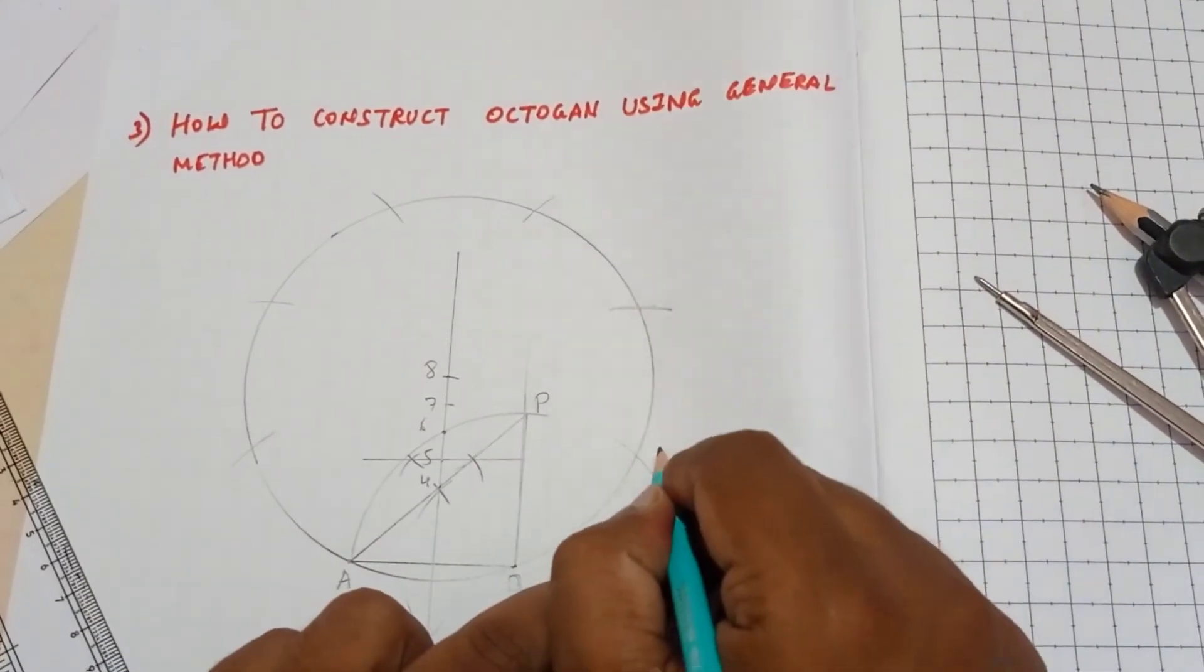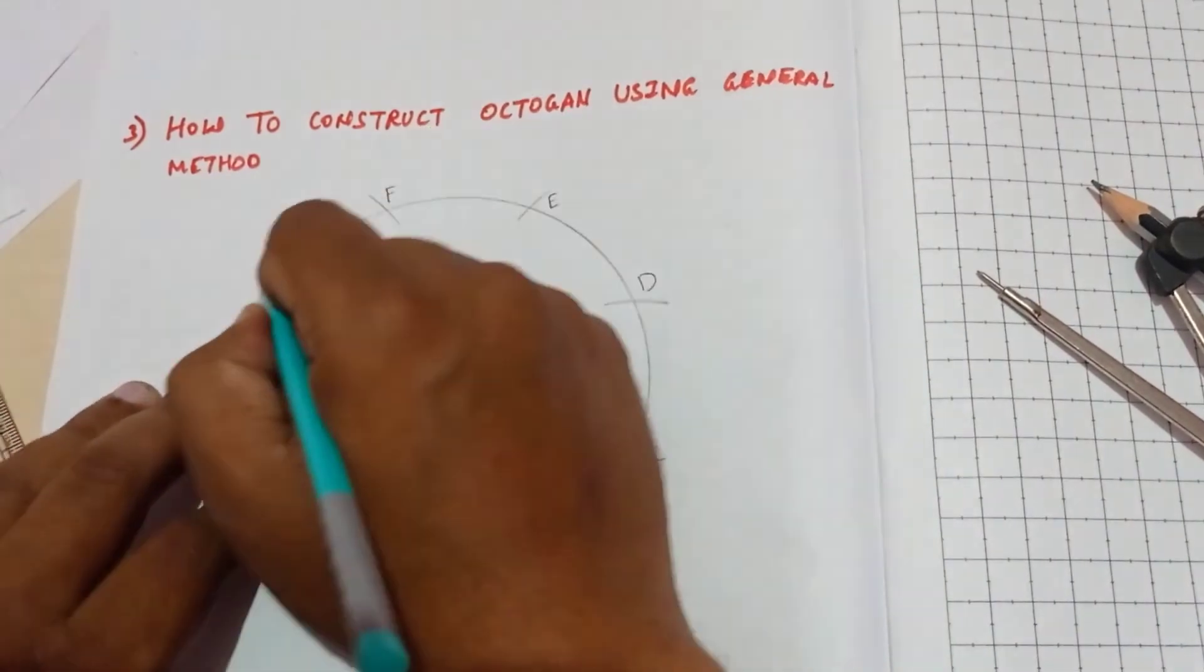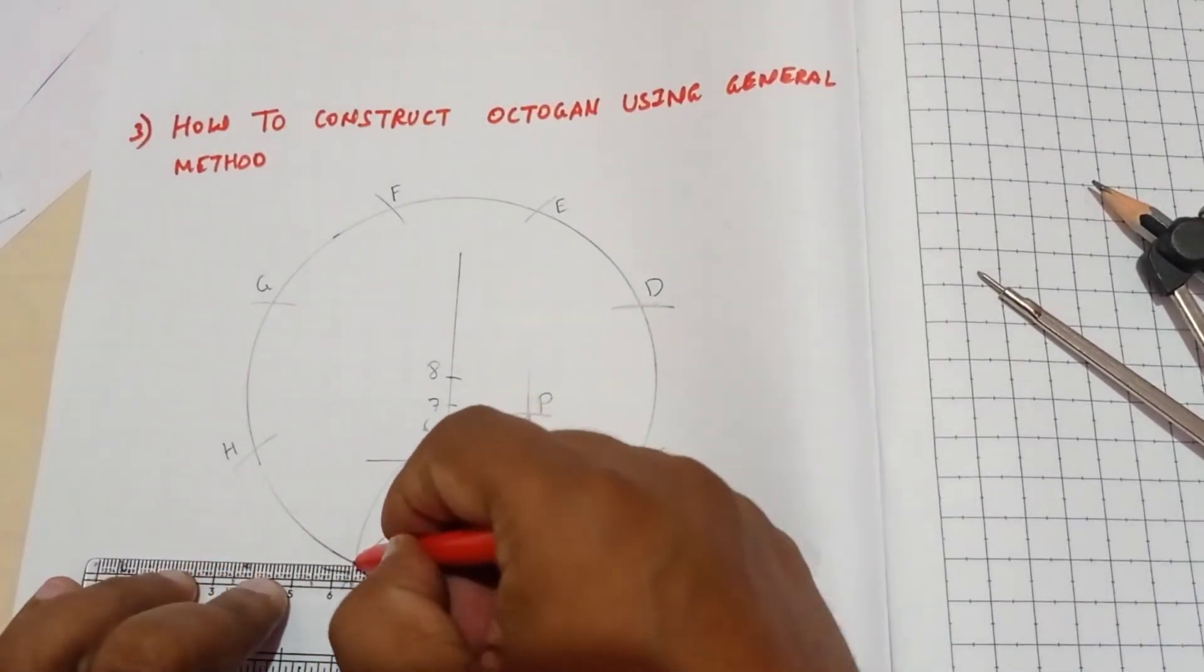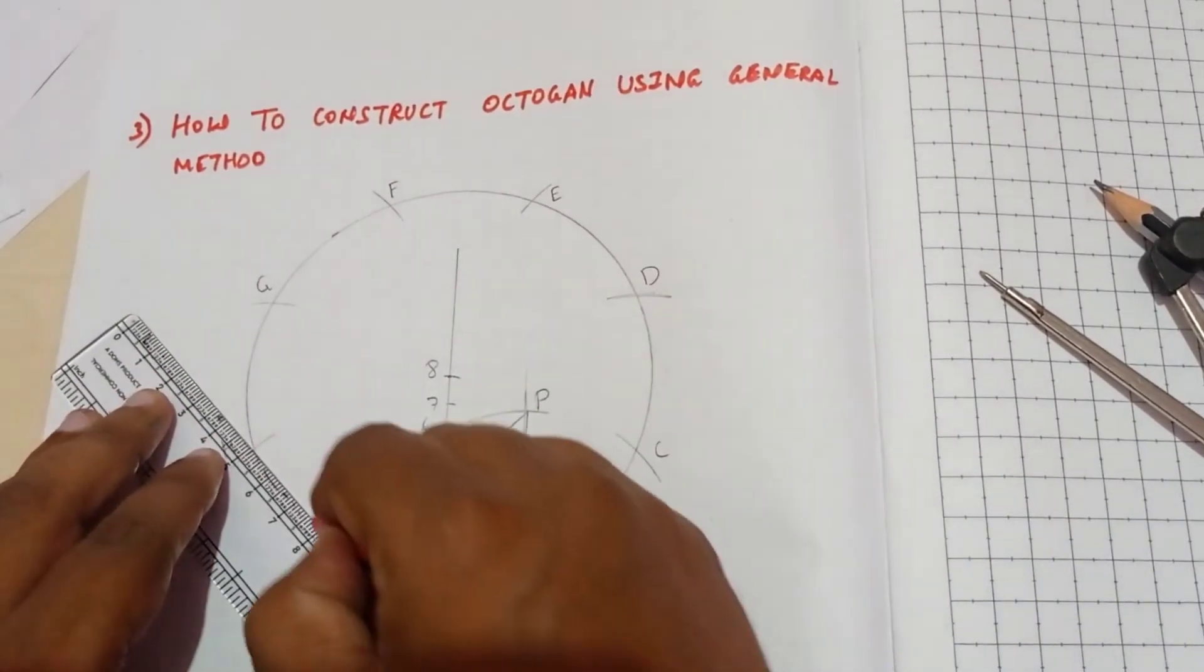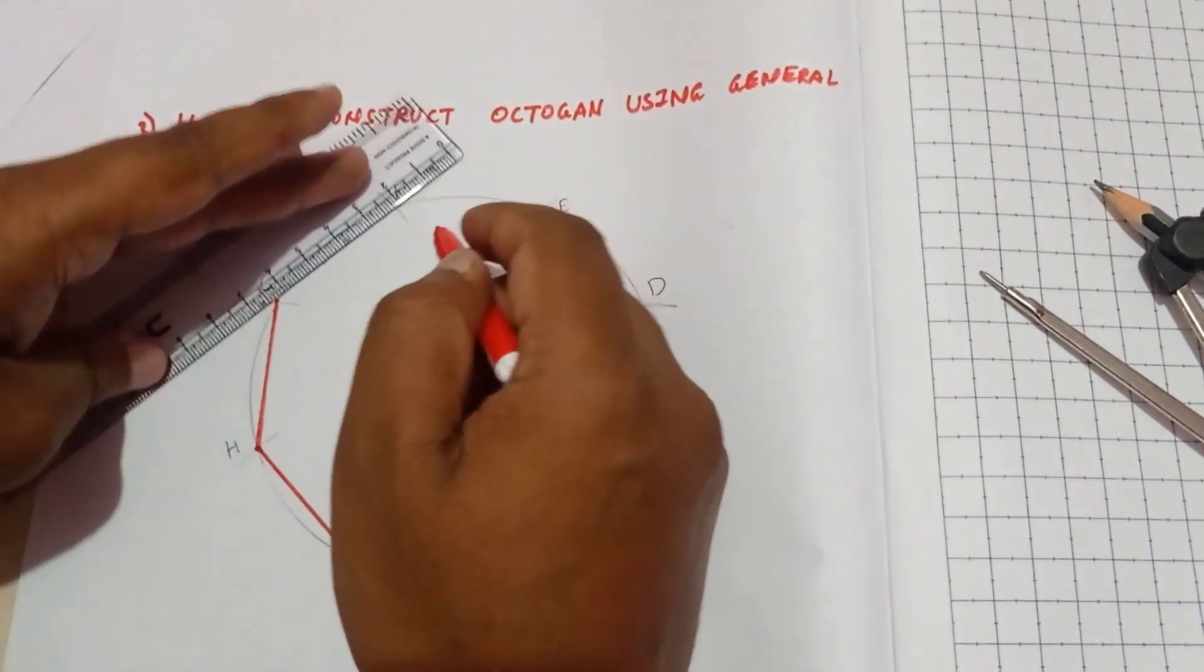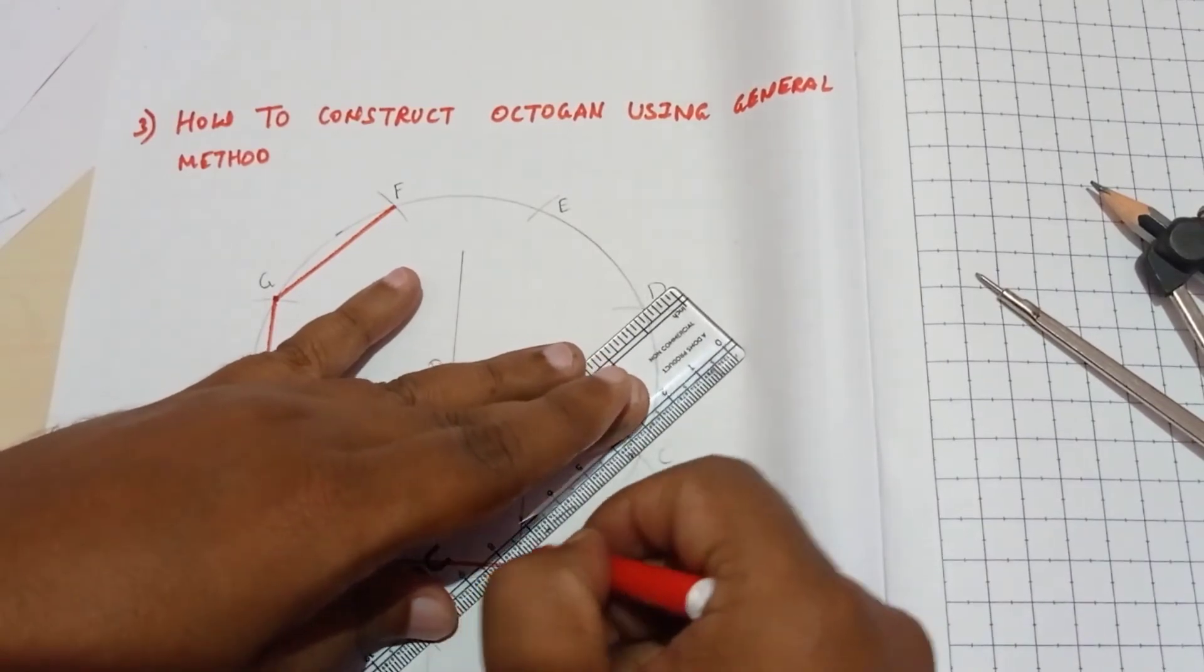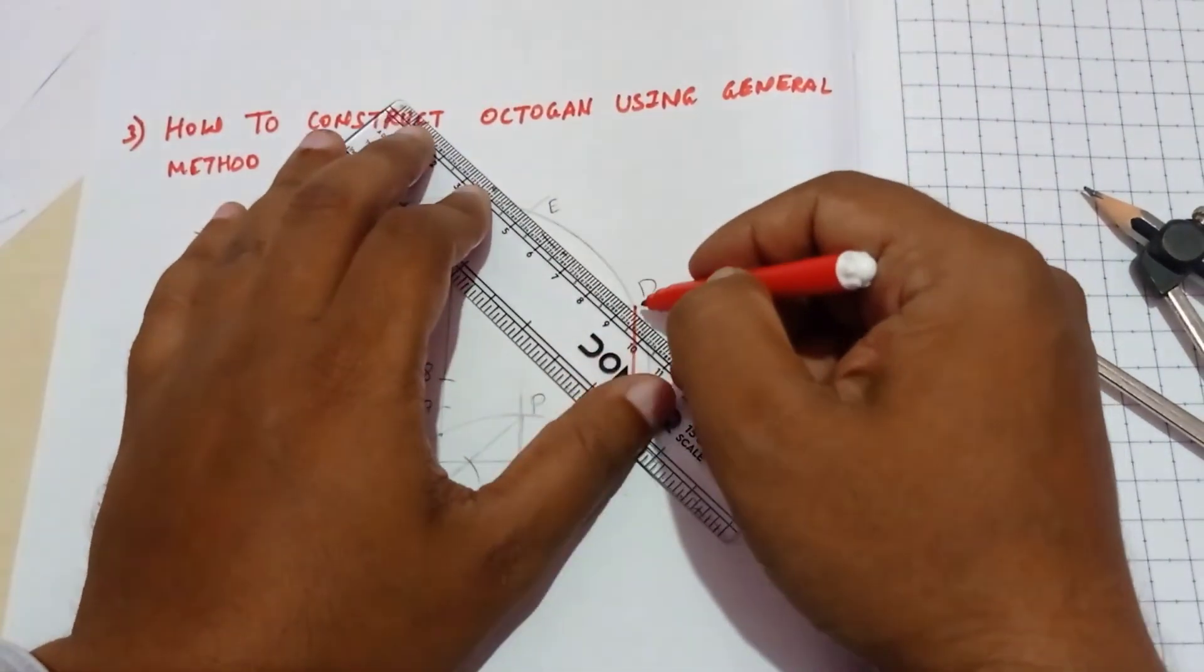Now we can give the naming for this: this is C, this is D, this is E, this is F, this is G, this is H. Now we have to connect all these cut points with straight lines. Join all these points with the straight lines.